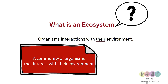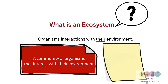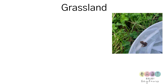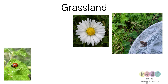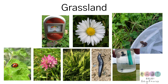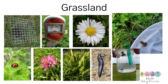Some examples of ecosystems would be grassland, pond, meadow, hedgerow, and rock pool. A feature of this topic was that you had to conduct a study of an ecosystem, and grassland is quite common — here you can see some pictures of that study.